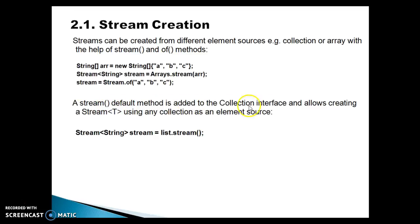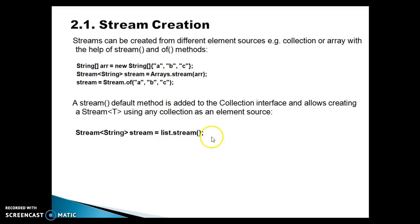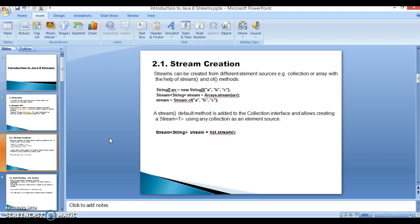A stream default method has been added to the collection interface and allows creating a stream using any collection as an element source. Suppose you have a list — the stream method is available in the collection interface, so it is inherited by the list interface. You call list.stream() and you get the stream object. This way you can create the stream object.